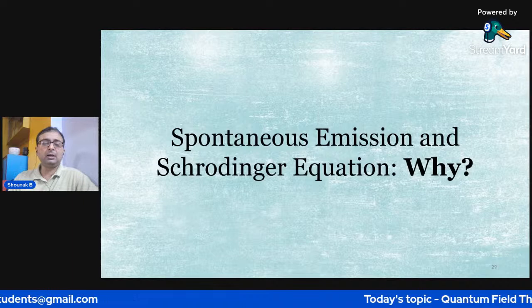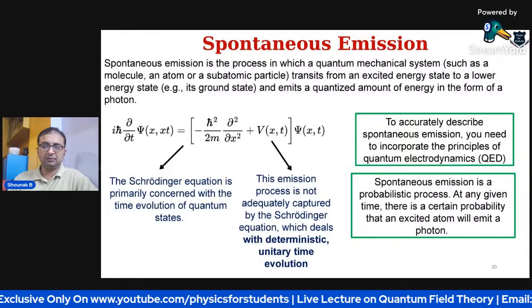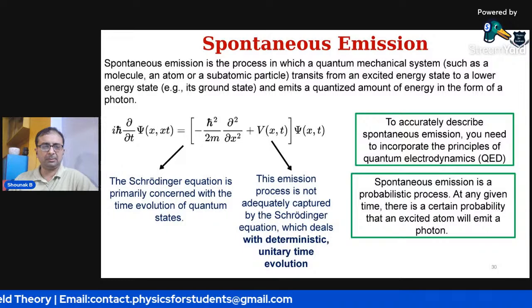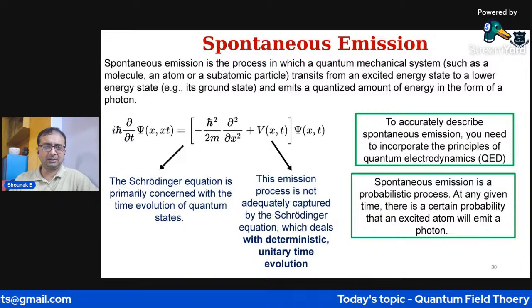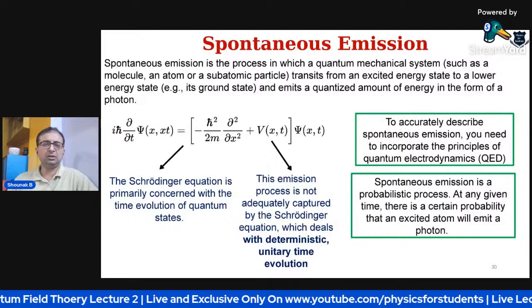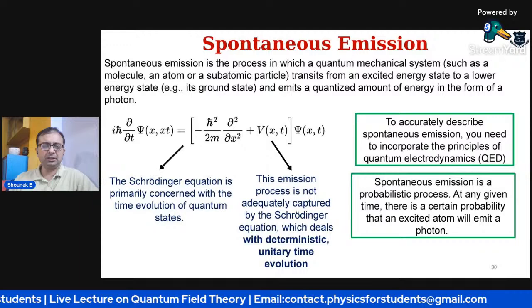First, I would like to understand why Schrödinger's equation was unable to register spontaneous emission. Spontaneous emission is the process in which a quantum mechanical system — such as an atom or subatomic particle — transits from an excited energy state to a lower energy state and emits energy in the form of a photon.